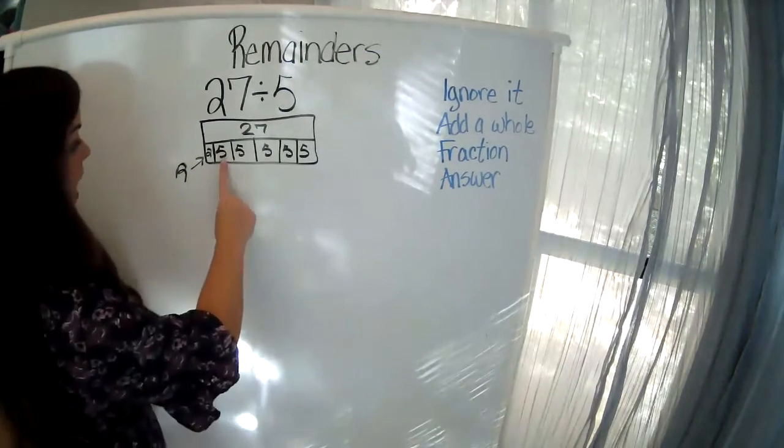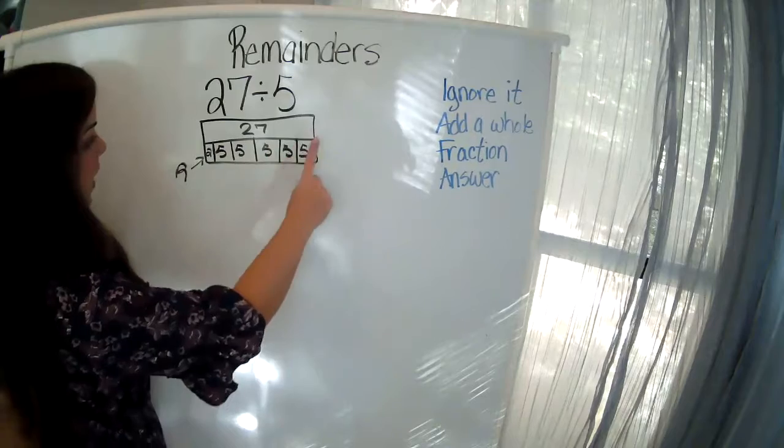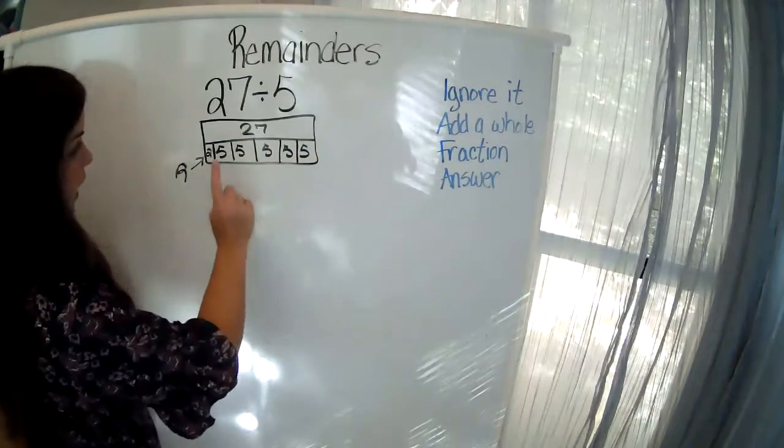Because if we skip count by 5: 5, 10, 15, 20, 25, and then my little 2 over here.